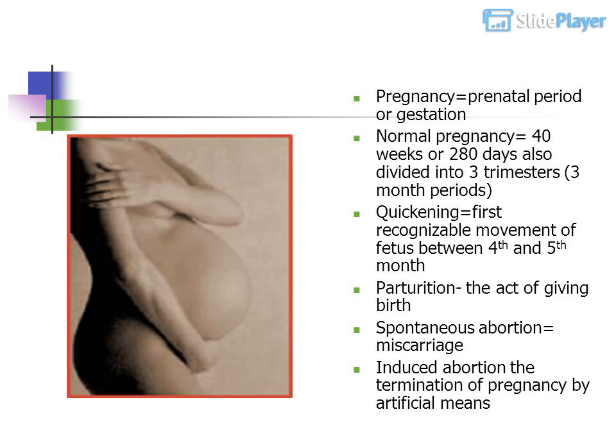Quickening equals the first recognizable movement of the fetus, between the 4th and 5th month. Parturition is the act of giving birth. Spontaneous abortion equals miscarriage. Induced abortion is the termination of pregnancy by artificial means.